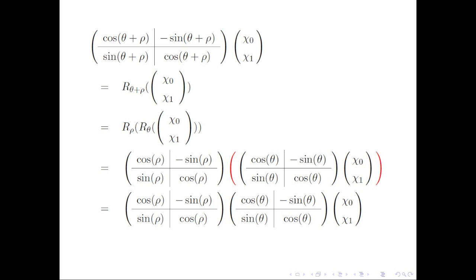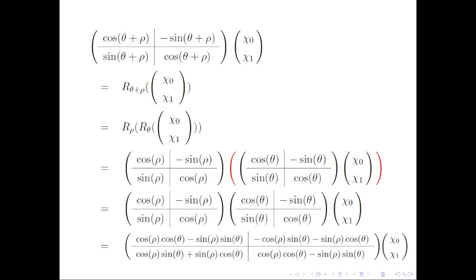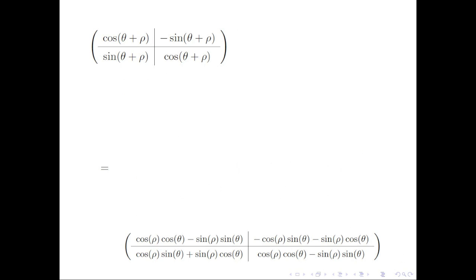We can drop the parentheses and compute the matrix that represents the composed rotations by multiplying the two given rotation matrices together. What we conclude is that the matrix representing rotation through angle theta plus rho equals the matrix representing rotation through angle rho times the matrix representing rotation through angle theta.